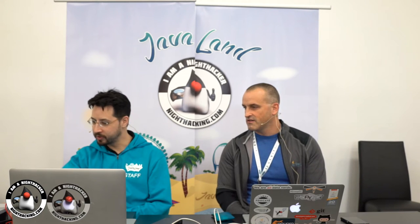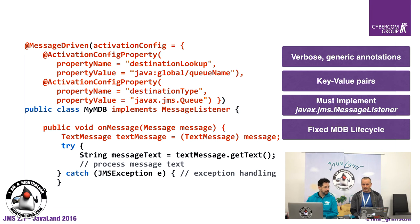I'm going to flip to your screen here. There's a lot of red there, because this is how it looks in 2.0. There's nothing wrong with it per se — it does what it's supposed to do. This is a message-driven bean that listens to a queue, and all this red stuff is what you need today to tell this message-driven bean that it's going to listen to that queue. It's pretty verbose — a lot of ceremony.